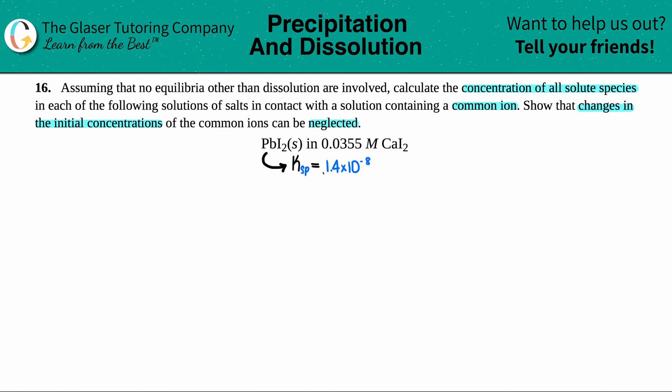With this Ksp, I'm going to have to write a balanced equation for just the solid being dissolved under dissolution. So let's do that first: PbI₂ solid, this is at equilibrium because we're talking about K values.